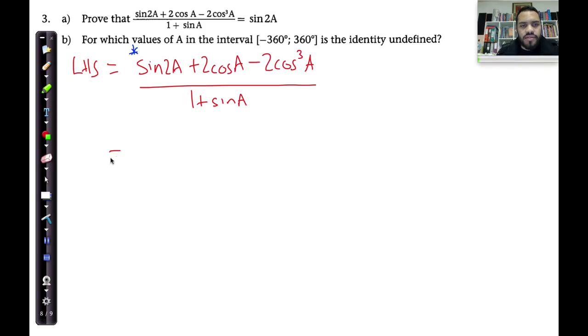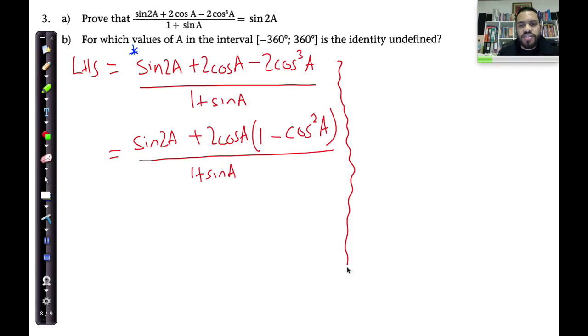That's going to be sin2A plus 2cosA multiplied by 1 minus cos²A. That's been factored out because when I multiply this, I get that, and when I multiply the second part, I get this here, 2cos³A. Now I can put that all over 1 + sinA. We might just need that space on that side. 1 + sinA.